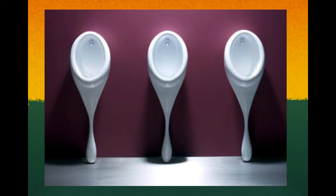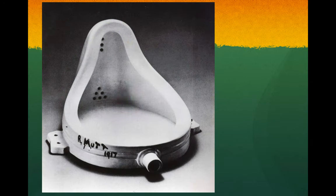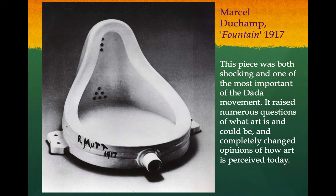What about this? Some might not consider this art — it's a urinal. But what if I told you this was made in 1917, signed with the signature 'R. Mutt,' by a very famous Dadaist artist called Marcel Duchamp? He named this piece 'The Fountain,' and it was very shocking at the time.